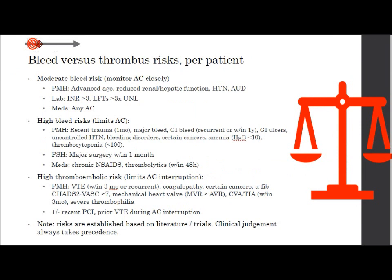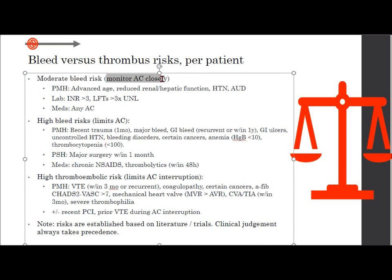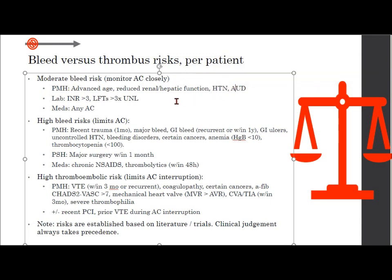Starting this timeline, the first thing to consider is who is your patient — what is their bleed risk, and what is their thromboembolic risk? Patients at a moderate bleed risk need close anticoagulation monitoring: those of advanced age, those with reduced renal or hepatic function, hypertension, alcohol use disorders, INRs greater than 3, LFTs greater than 3 times the upper normal limit, and of course those already taking anticoagulants. A high bleed risk, unlike moderate, may actually limit the use of an anticoagulant.